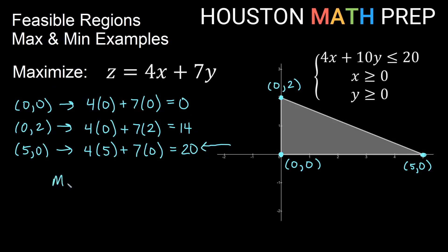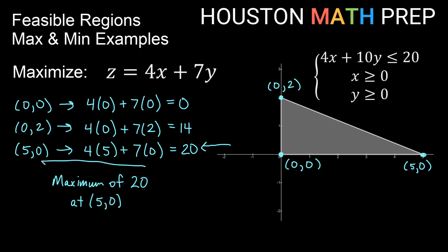So we have a maximum of 20, and that occurs at the point 5 comma 0. The idea is that the triangle is our feasible region, and we plug in all the vertices to find which gives the most out of the formula 4x plus 7y. That highest value is our answer, along with the point where it occurs.